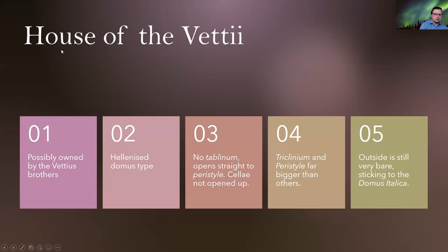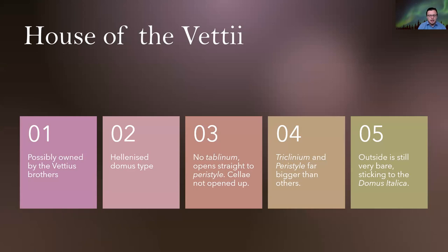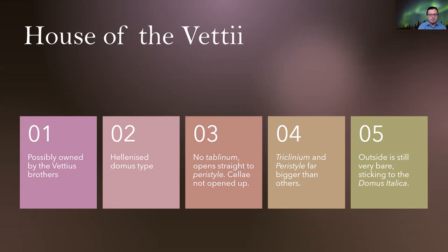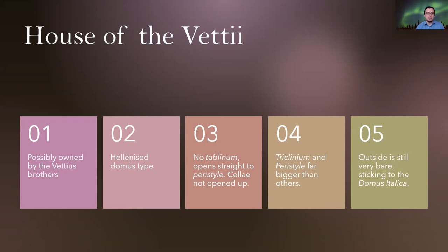What do we need to know about the House of the Vettii? It was possibly owned by the Vettii brothers. It is a Hellenised domus type — we know this from the columns in the peristyle and the pilasters. It has no tablinum and opens straight to the peristyle, and the cellae are not opened up to the street, meaning they are not tabernae. This is a departure from the domus italica style. Its triclinium and peristyle are far bigger than others. The outside is still very bare, sticking to the domus italica tradition — even though the interior is really superb, the outside looks really bland, which is typical in Roman housing.